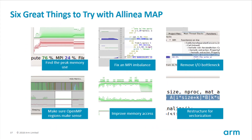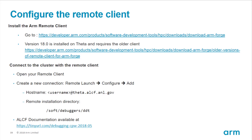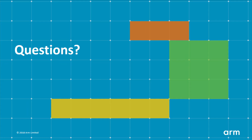Things you can do with Map: find peak memory usage, find imbalances and bottlenecks, and make sure OpenMP regions make sense. Sometimes you have a section of code with OpenMP synchronization where it might actually be faster to turn off OpenMP there. And these are the Theta-specific settings on how to run it. Any questions on the tools?